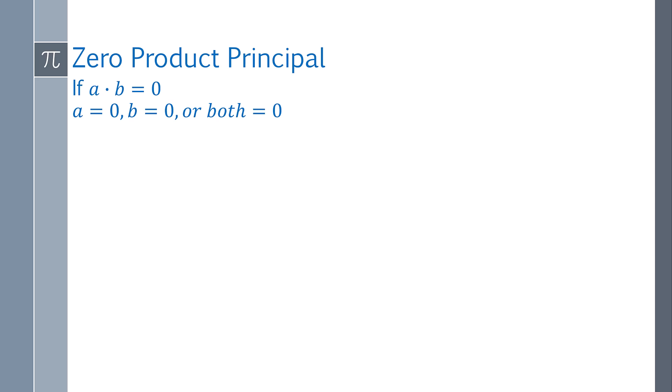Now the zero product principle says if you multiply any two numbers, a and b, and it equals 0, you can assume that a equals 0, b equals 0, or both equals 0.